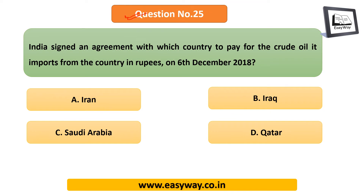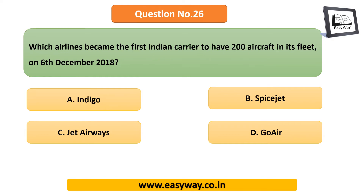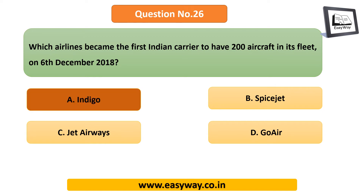Question 25: India signed an agreement with which country to pay for the crude oil it imports in rupees? The answer is Iran. Question 26 — star mark this: Which airline became the first Indian carrier to have 200 aircraft in its fleet? The answer is IndiGo.